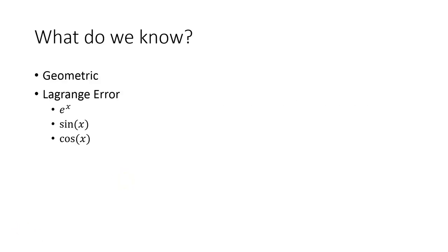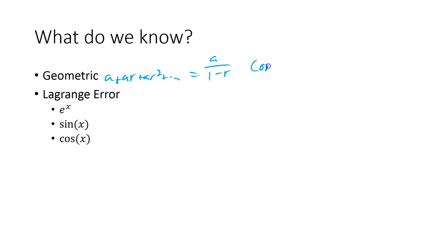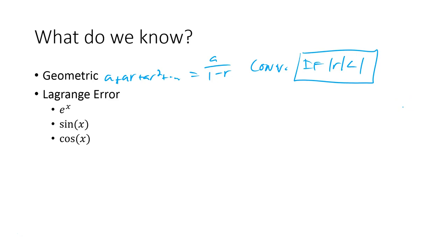For a geometric series, we know that if we have a first term A and a constant term R, so A plus AR plus AR squared, that's going to end up equaling just A over 1 minus R, and this converges if the absolute value of R is less than 1. So this is kind of what we're focusing on today: when does a series converge? For geometric, we know if the ratio is less than 1, for sure we're going to converge.